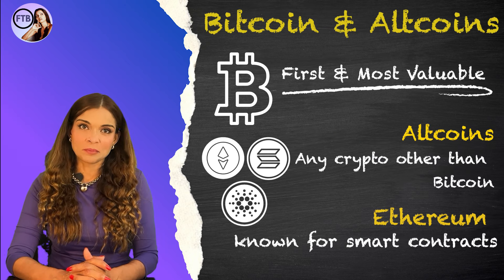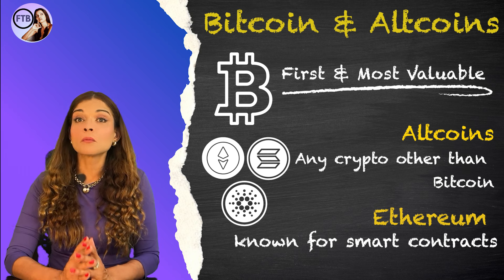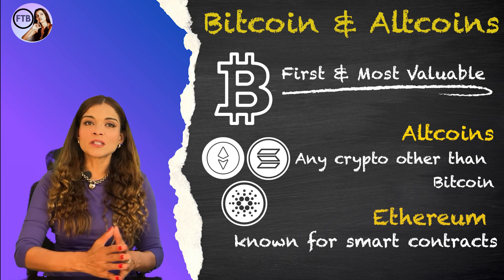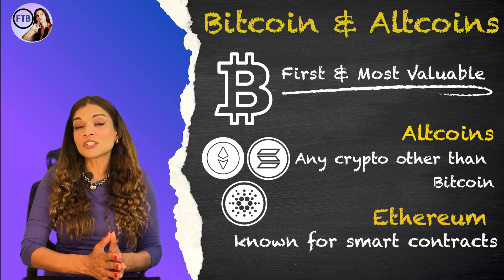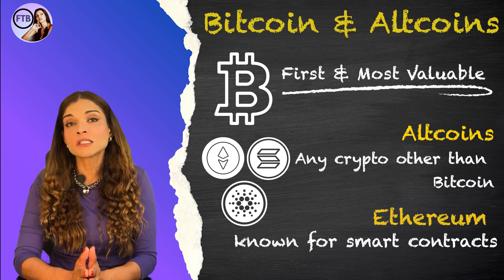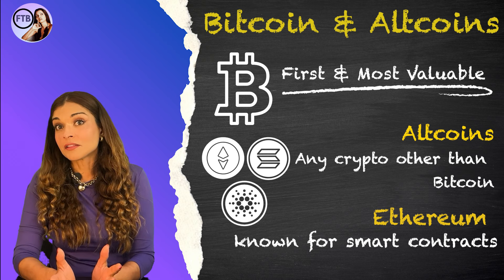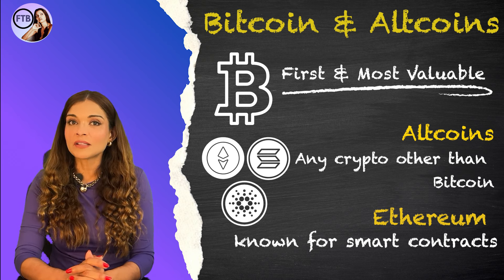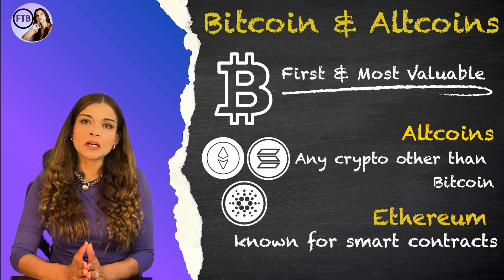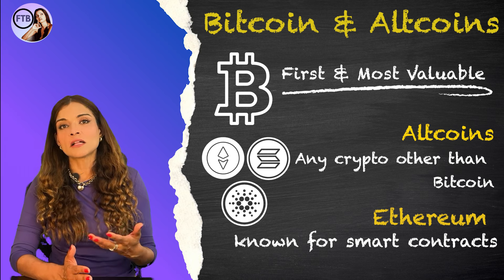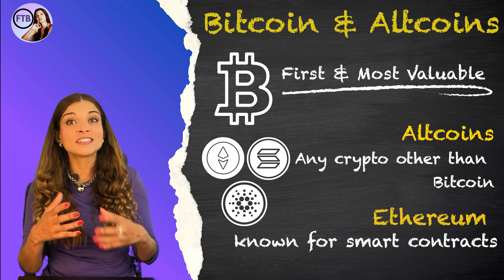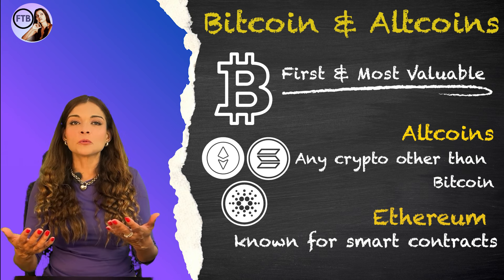Bitcoin was the first cryptocurrency and it remains the most valuable. Bitcoin is decentralized, meaning you can send it directly to someone without needing a bank. Altcoins are any other cryptocurrencies other than Bitcoin. Ethereum is the most popular altcoin and is known for its smart contract capabilities. Smart contracts are self-executing contracts with the terms of the agreement written directly into the code, opening up a world of possibilities beyond just currency.